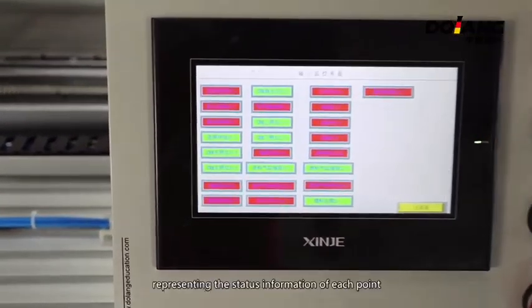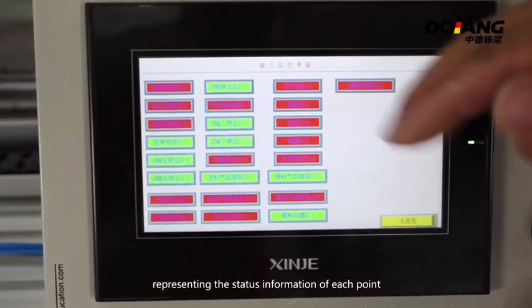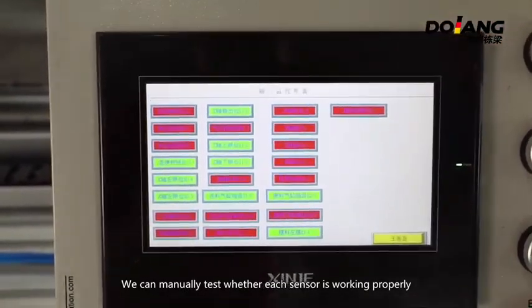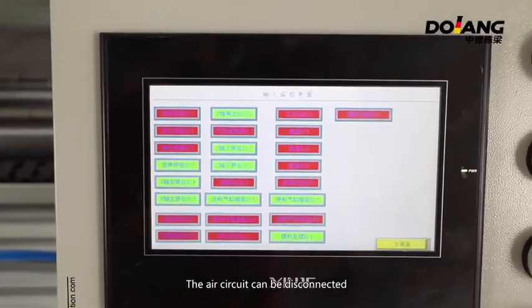We see a lot of red and green boxes, representing the status information of each point. We can manually test whether each sensor is working properly.